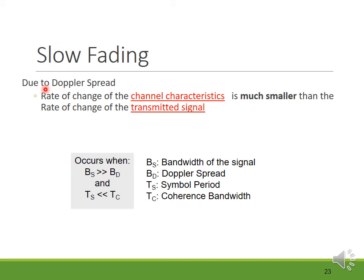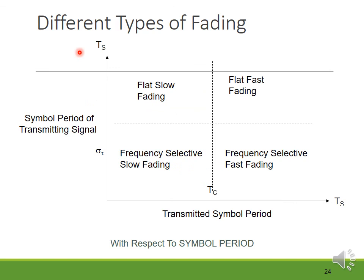Slow fading is also due to Doppler spread. Here the rate of change of channel characteristics is much smaller than the rate of change of the transmitted signal. In a slow fading channel, the channel impulse response changes at a rate much slower than the transmitted baseband signal. Slow fading occurs when the bandwidth of the signal is much greater than the Doppler spread and the symbol period is much less than the coherence time.